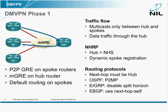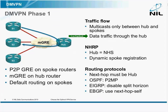Let's start with Phase 1. On the spoke routers you have point-to-point GRE tunnels. On the hub router you have a multi-point tunnel. You could use default routing on spokes or anything else you like, as long as the hub is the next hop. Data traffic flows only through the hub, so whatever the spokes do, however they want to exchange traffic, all traffic between spokes goes through the hub.